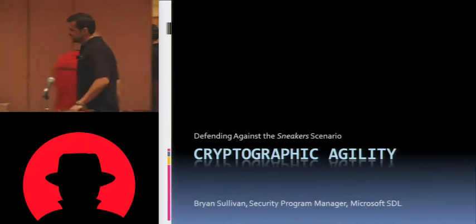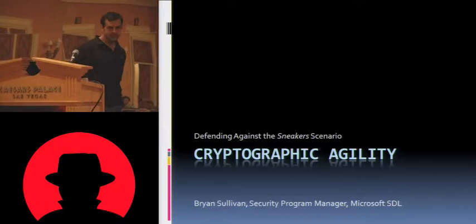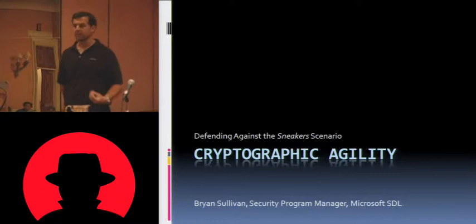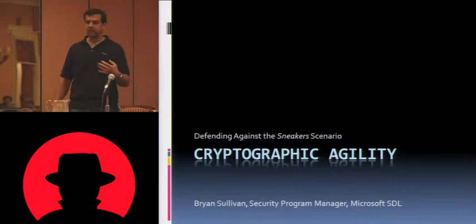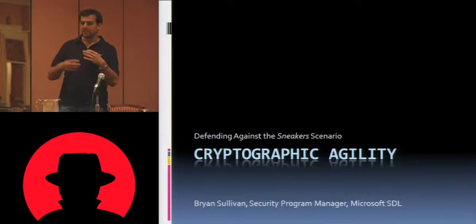My name is Brian Sullivan. I'm a security PM on the SDL team at Microsoft. You're all here today to learn about crypto agility. Crypto agility is the ability of an application to change whatever types of cryptographic algorithms, or the particular implementations of those algorithms, in configuration without having to make changes to the source code itself, without having to recompile it or issue patches. A properly designed application should just be able to be reconfigured by the end user or administrator without even having to have access to the source code.